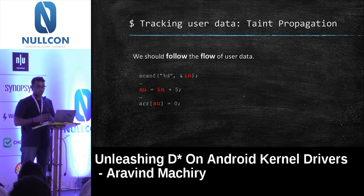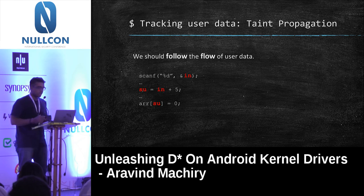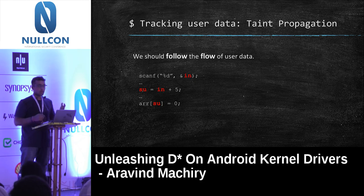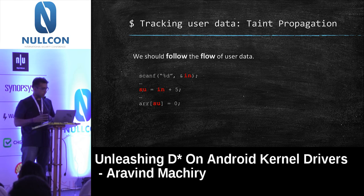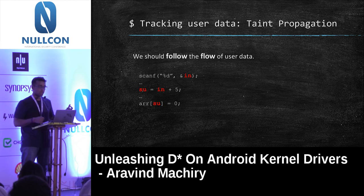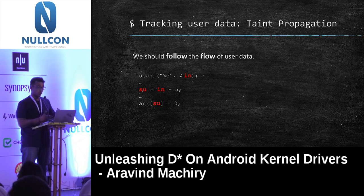The second part of tracking user data is taint propagation — a technique to follow the flow of user data. Not only pointers, but you should also know how user data flows within the program. For example, if we read user input into variable 'in', compute 'su' by adding 5 to it, then use 'su' as an array index — that's an obvious out-of-bounds access. Unless we follow the flow of input data, we cannot detect it.